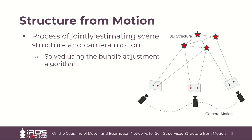Structure from motion is the process of jointly estimating scene structure and camera motion from a stream of images. Traditional methods extract features from the images and jointly estimate their 3D locations along with the camera poses using a non-linear optimization algorithm called bundle adjustment.